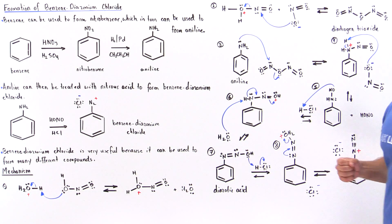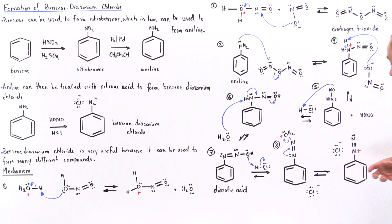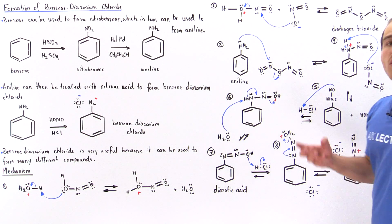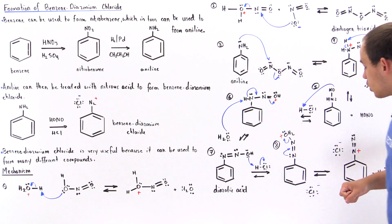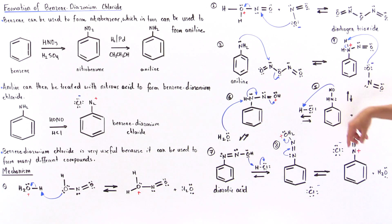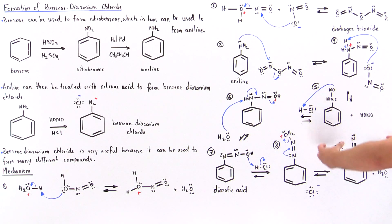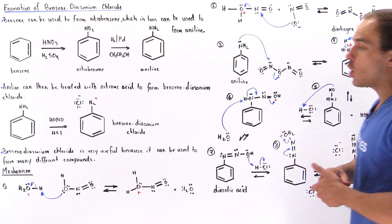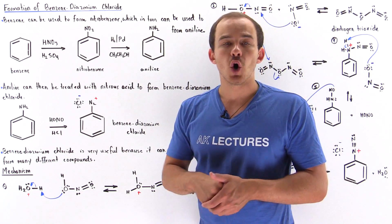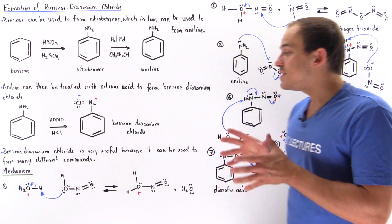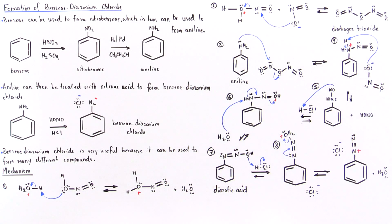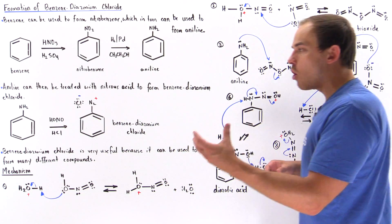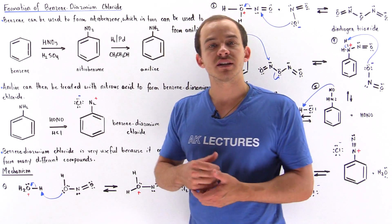The chloride approaches the nitrogen because it has a positive charge, and this entire complex is known as benzene diazonium chloride. This is a very useful compound, because from it we can form many other important compounds, as we'll see in the next lecture.